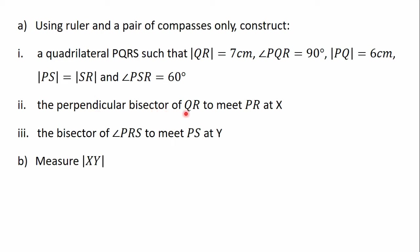The angle PSR is equal to 60 degrees. Part ii: construct the perpendicular bisector of the line QR to meet the line PR at X. Part iii: construct the bisector of the angle PRS to meet the line PX at Y. Part b: measure the length of the line XY. We are going to answer the first part in this video, then consider the remaining ones in the next video.